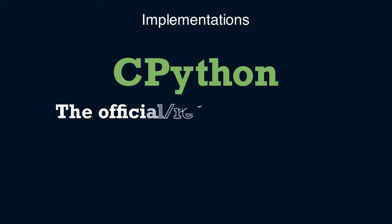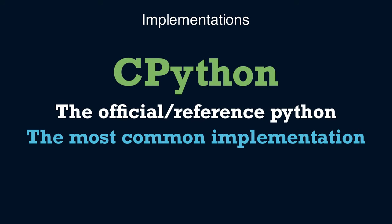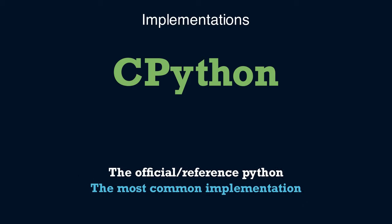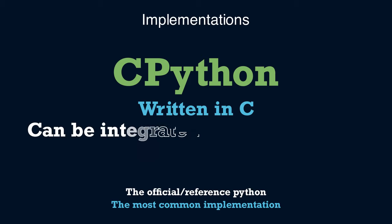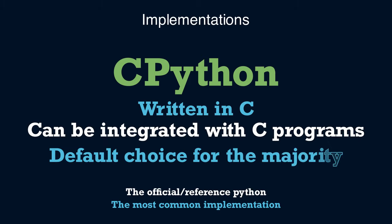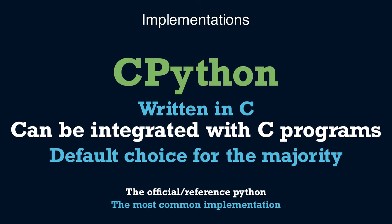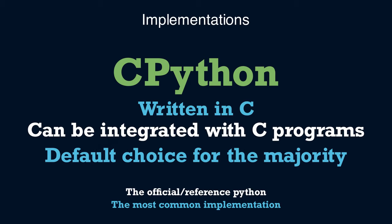CPython is the official and the most common implementation. When people just say Python, usually they mean this one. It's written mostly in C, and that's why the name. It's easy to write C extensions for your Python code. If you're just a beginner, stick with this, or if you need interoperability with C, this is your thing.